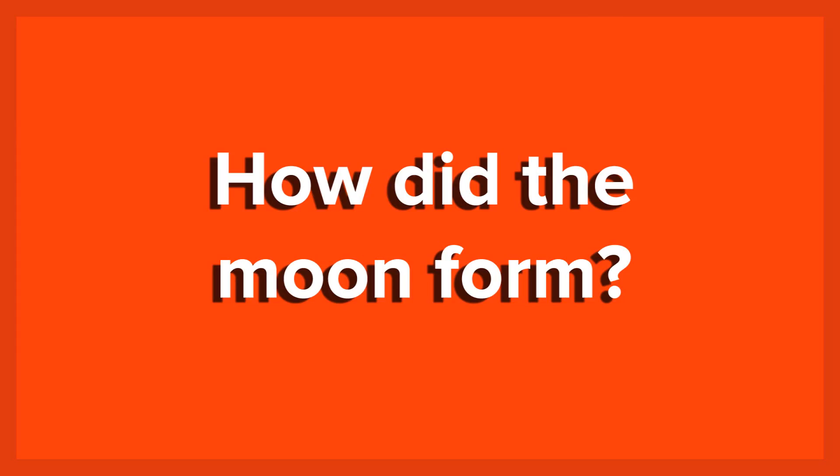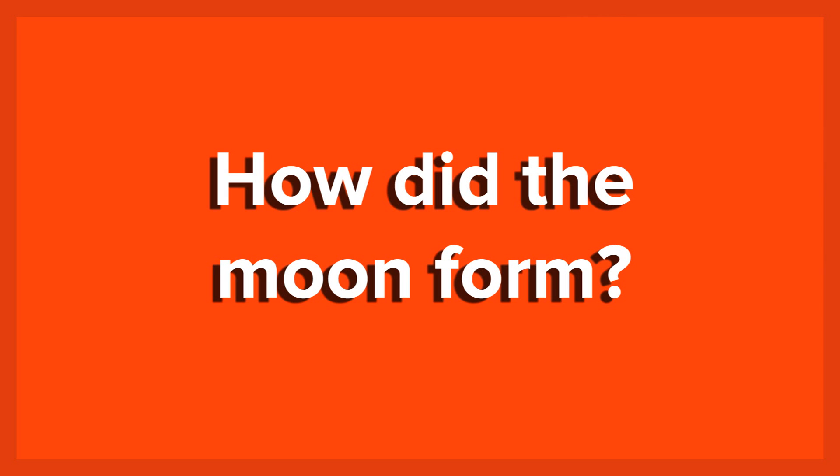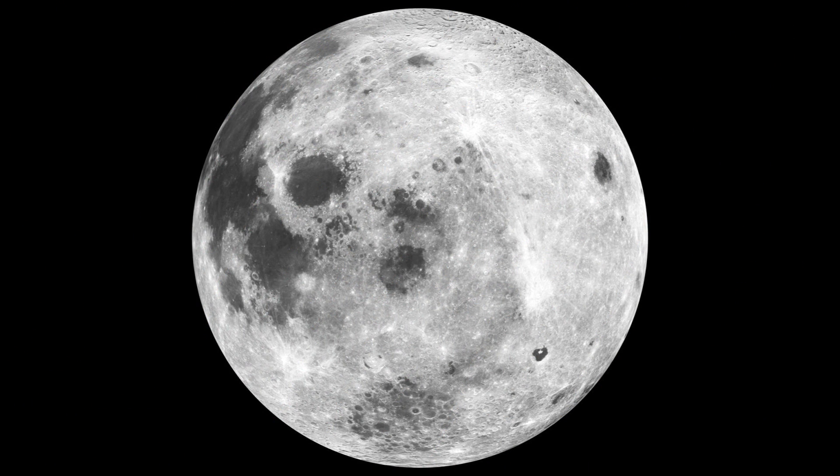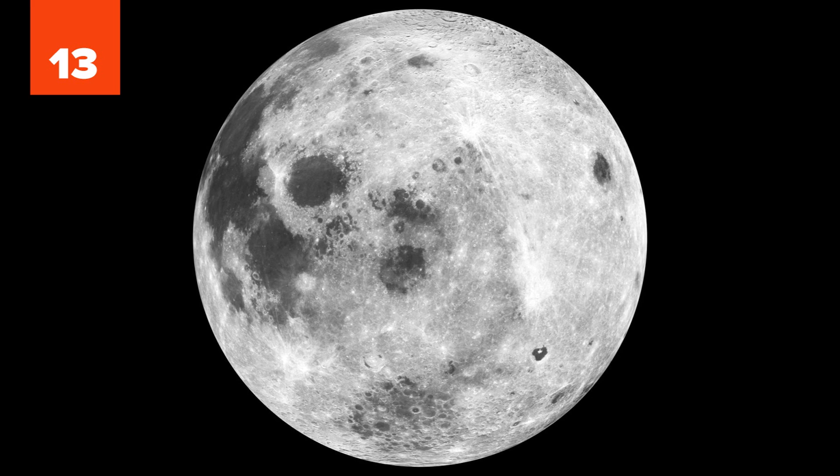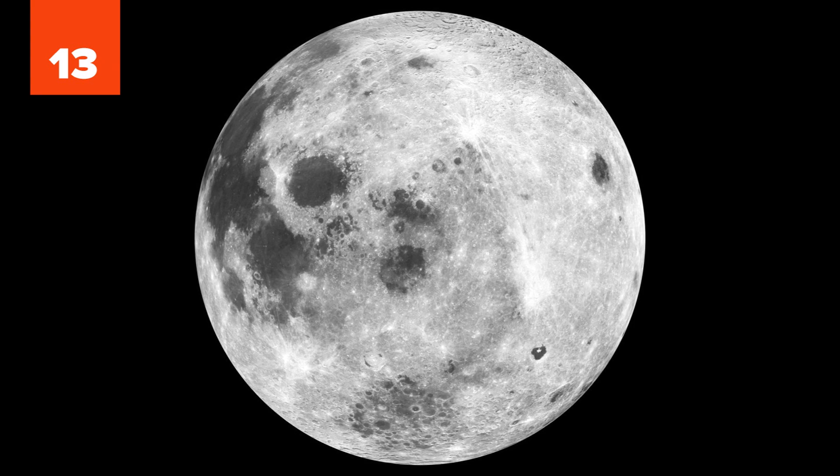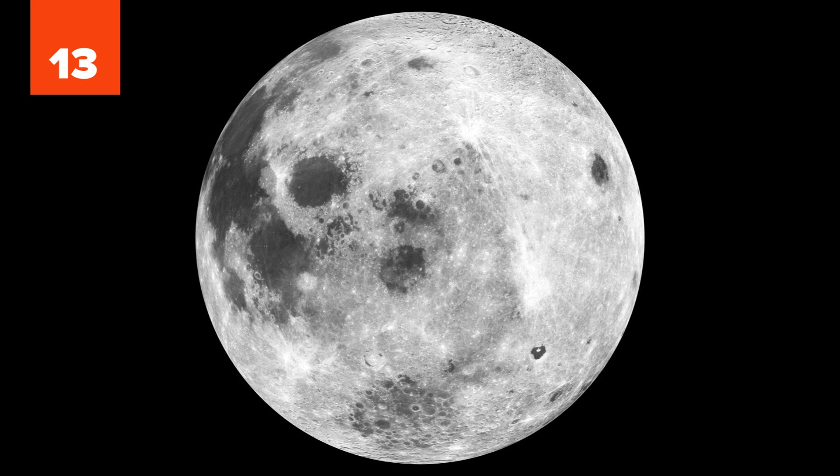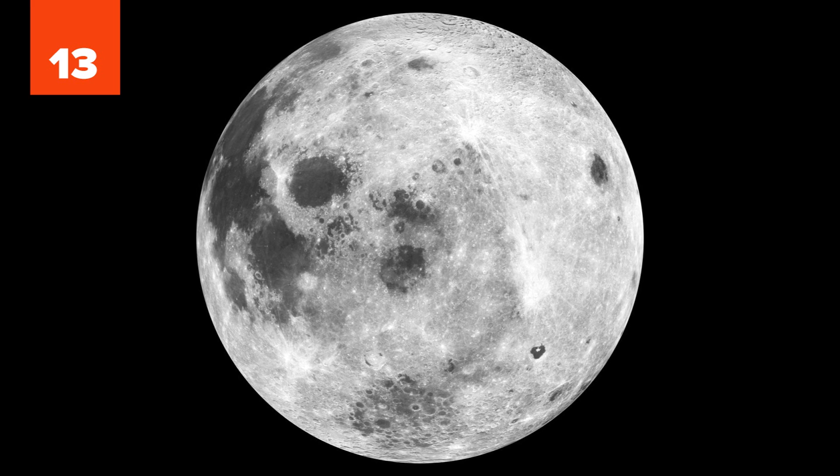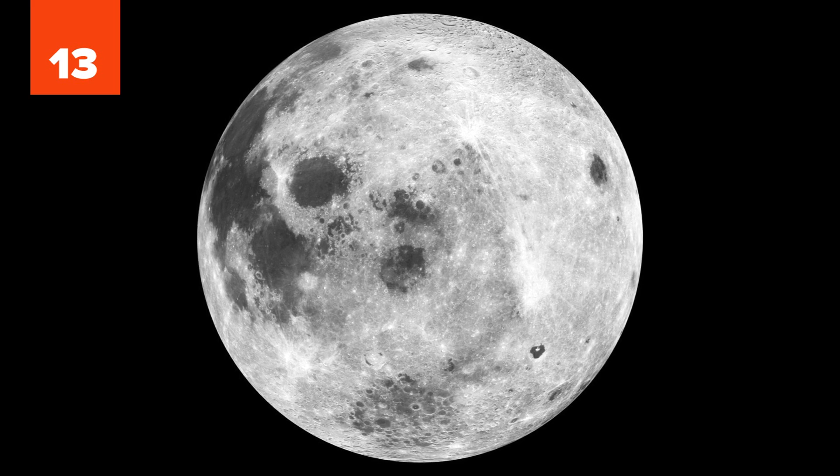Number 13: How Did The Moon Form? Where did our quiet, beautiful satellite that makes our nights more friendly and romantic come from? Scientists and philosophers have been wondering about this for centuries. The first modern idea about the formation of the moon was the fission theory by George Darwin, son of Charles.